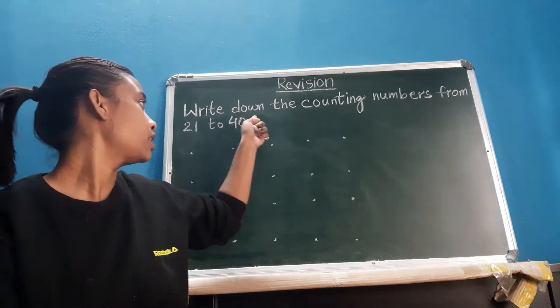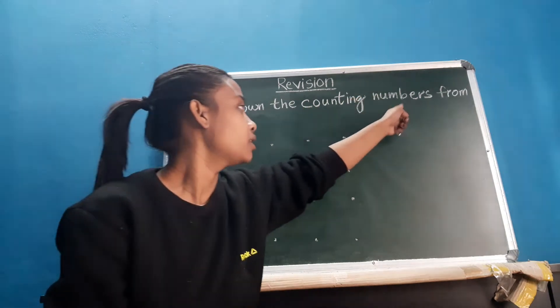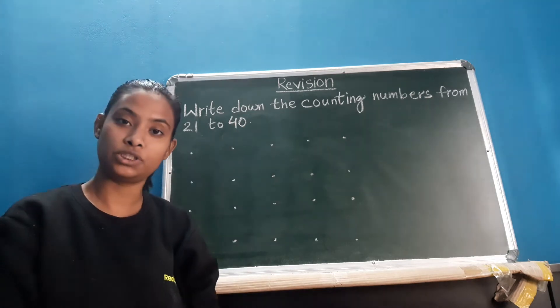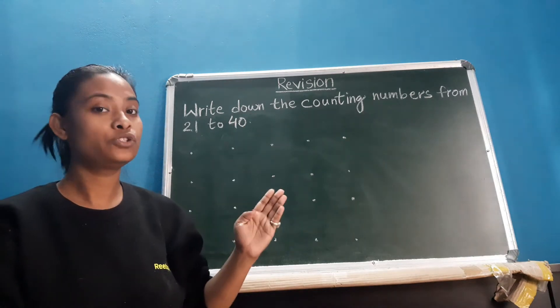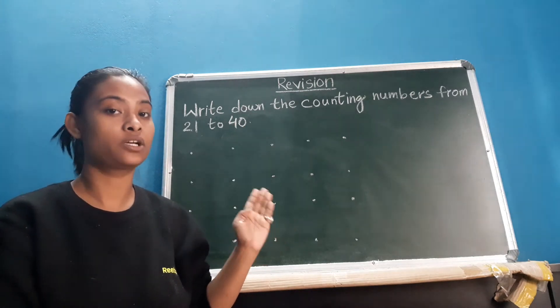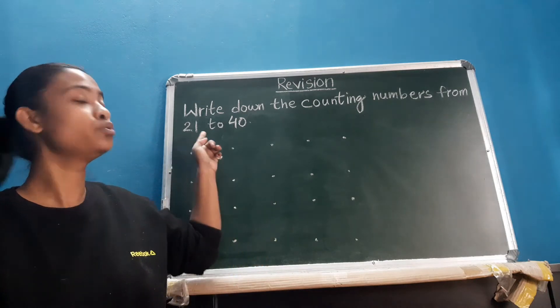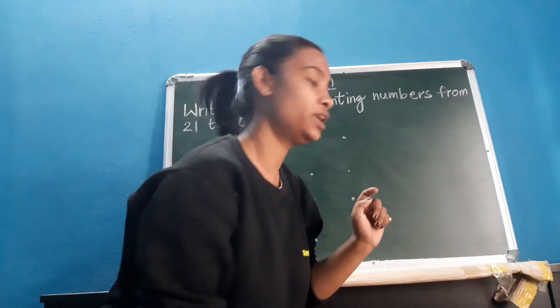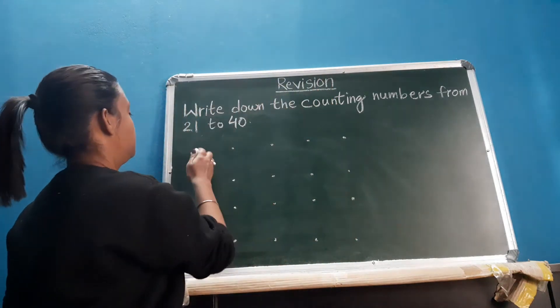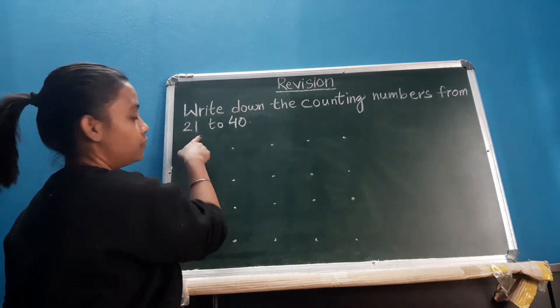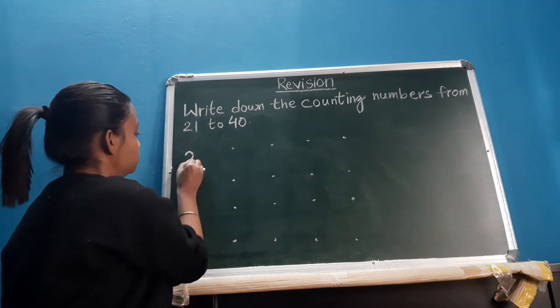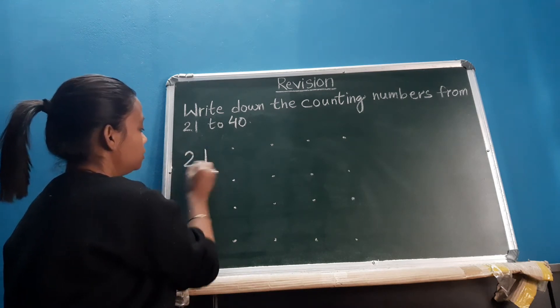Write down the counting numbers from 21 to 40. So what you need to do here is write counting numbers starting from 21 till 40. Let's begin. First start with 21.